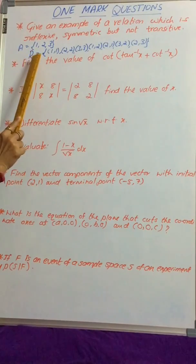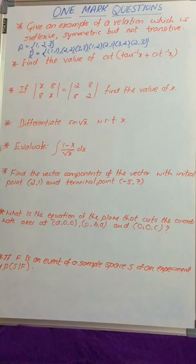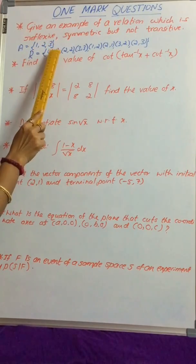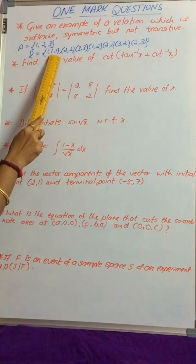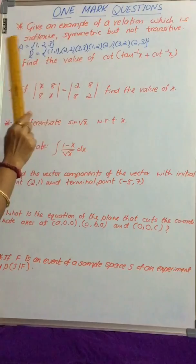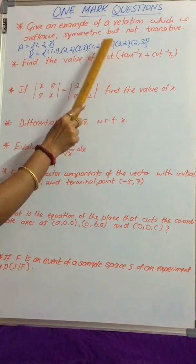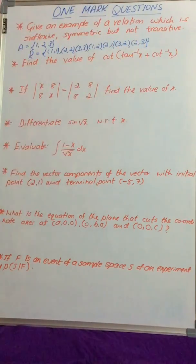Let us write a relation R on A. R equals the set containing ordered pairs (1,1), (2,2), (3,3), (1,2), (2,1), (3,2), and (2,3).